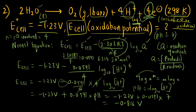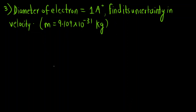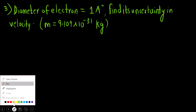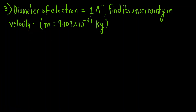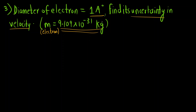The next question: the diameter of a moving electron is given as 1 Ångström (Δx = 1 Å), and the mass of the electron is 9.109 × 10⁻³¹ kg. We have to find the uncertainty in its velocity. This is based on Heisenberg's uncertainty principle.